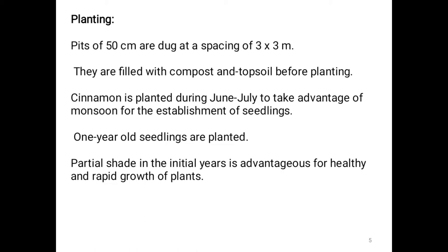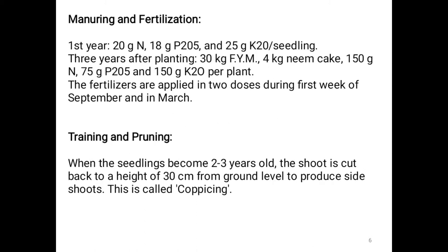Regarding manuring and fertilization: in the first year, apply 20 g nitrogen, 80 g phosphorus, and 25 g potash per seedling. After three years of planting, apply 30 kg FYM, 4 kg neem cake, 150 g nitrogen, 75 g phosphorus, and 150 g potash per plant. Fertilizers are applied in two doses — first week of September and in March.